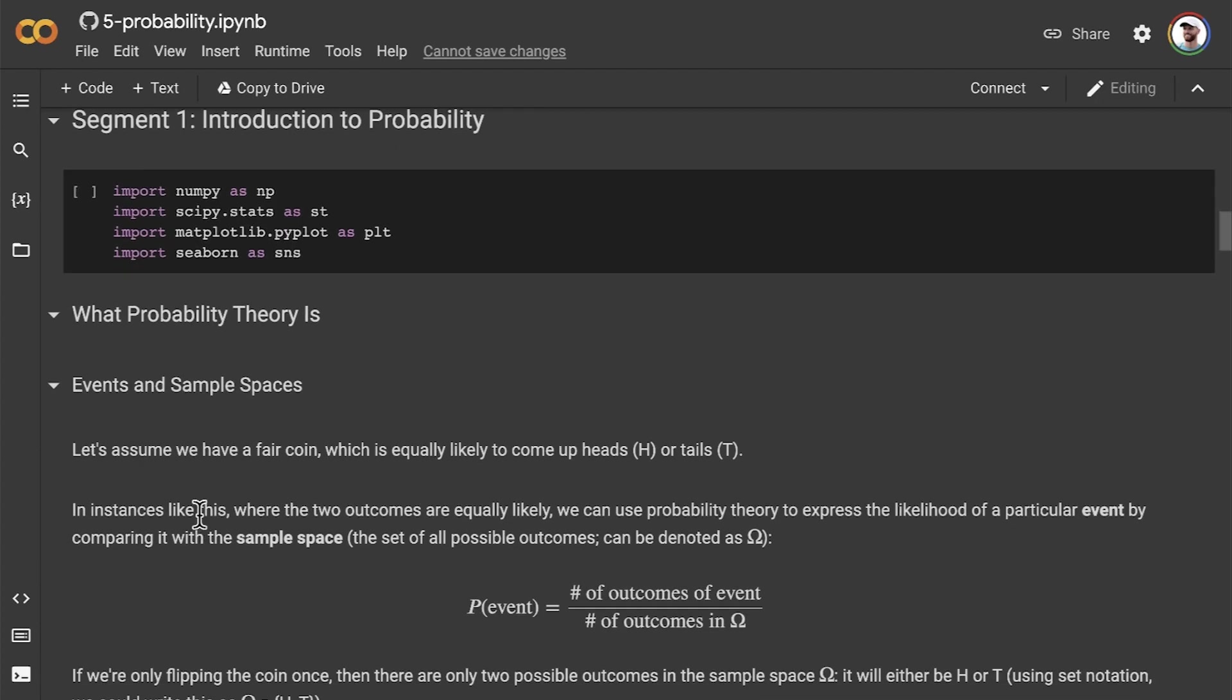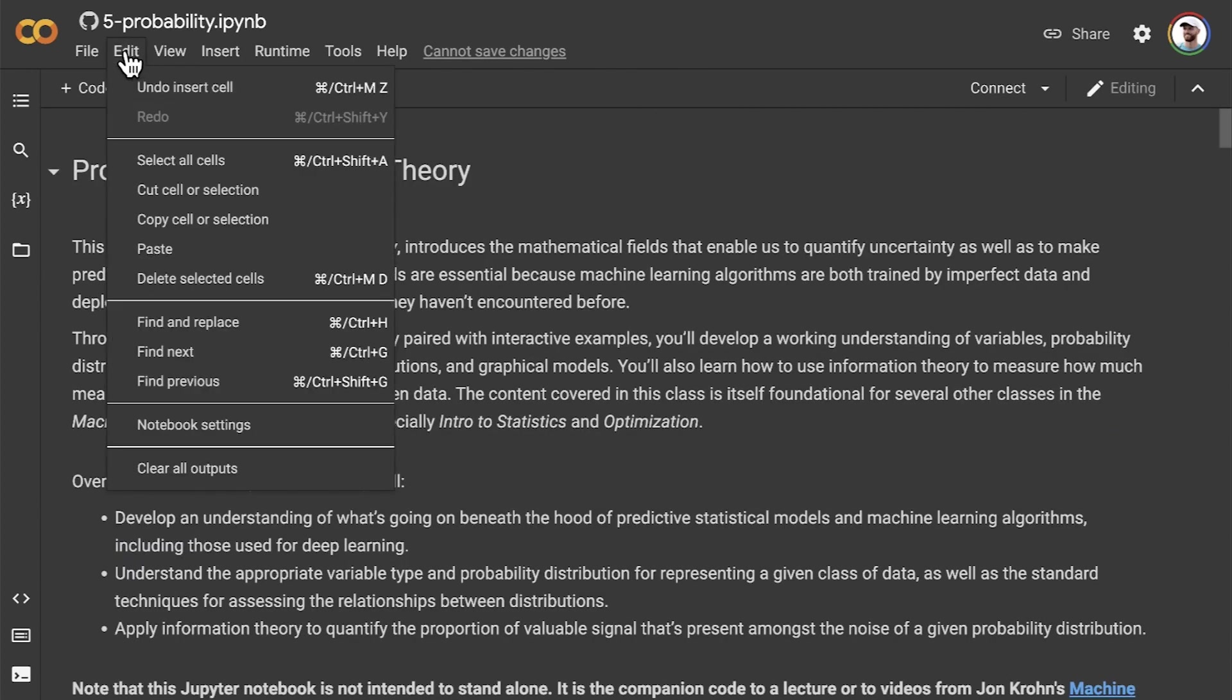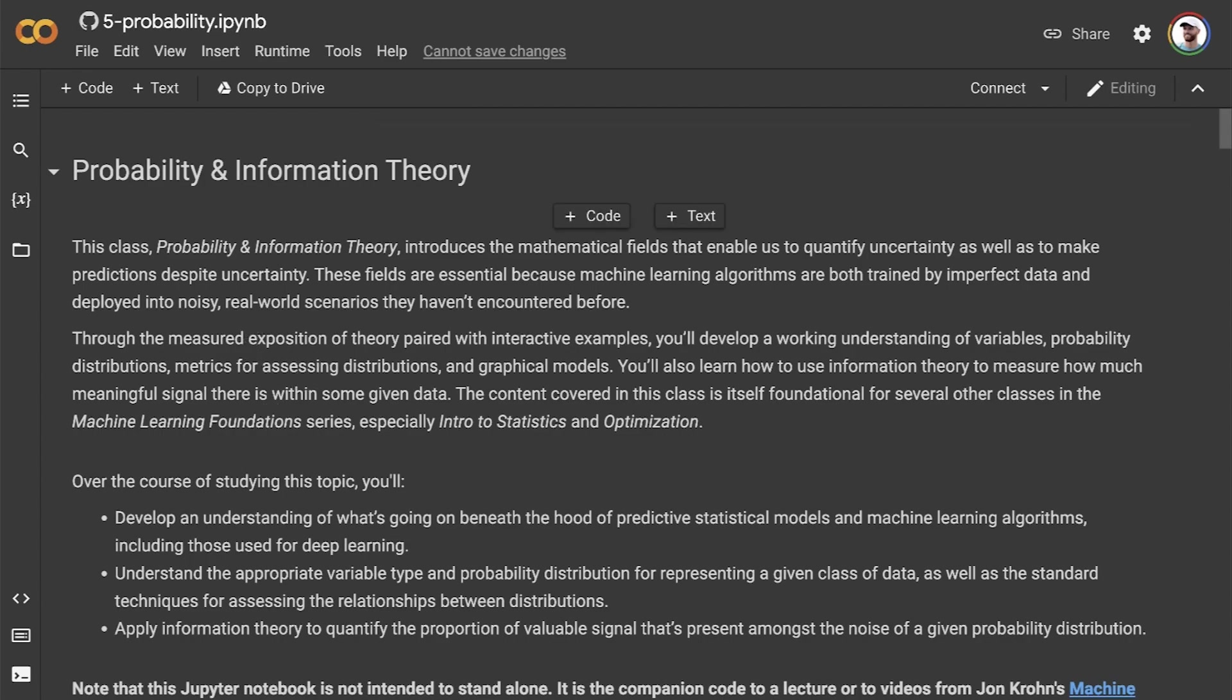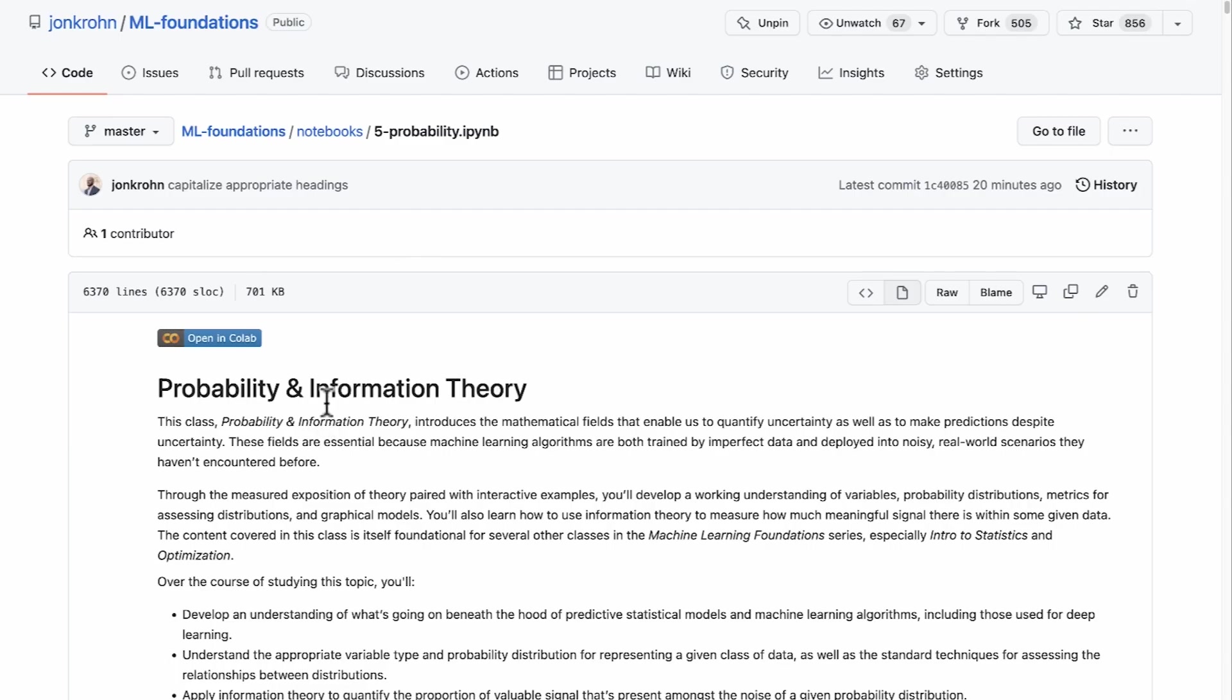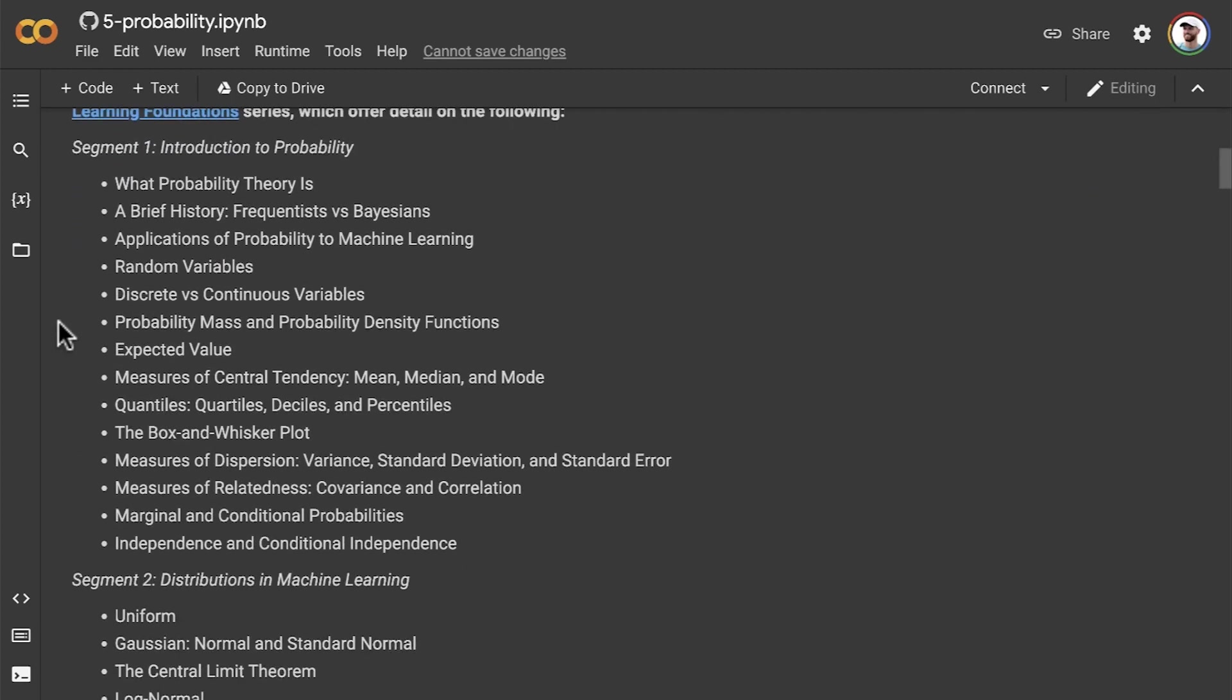As ever, when we're working with one of my Jupyter Notebooks from the top, we want to head to Edit and Clear All Outputs so that we don't have all the outputs that are available in GitHub. We want to create them afresh in our own way so you can make changes and get your own unique outputs.